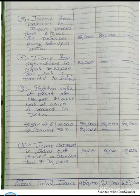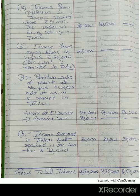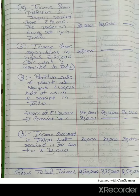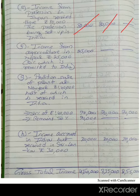Next type of income: income from profession in Japan, received there, Rs. 80,000, the profession being set up in India. The profession income arises in Japan, but since the profession is set up and managed or controlled in India, it is taxable to two parties — ordinary resident in India and not ordinary resident in India.